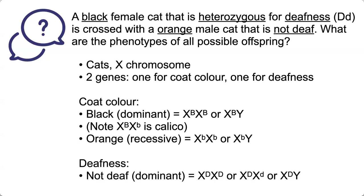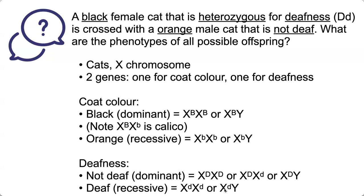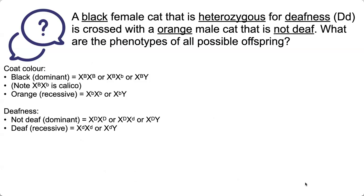For deafness, not deaf is dominant, and these are the genotypes that will result in a cat that is not deaf. Note that in the female, you do have X-linked inactivation, so you do have a mix. However, the large D is enough to mask the smaller d. So we'll just note that smaller on the side here.